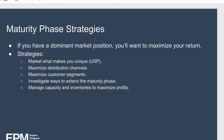If you have a dominant market position, the key goal of the maturity stage is to maximize the return on your product. Strategies include: your promotional activities should focus on what makes you unique — your unique selling point or USP. You should maximize the number of customer segments you offer the product to, investigate ways to extend the maturity phase of the product lifecycle, and manage capacity and inventories to maximize profits.